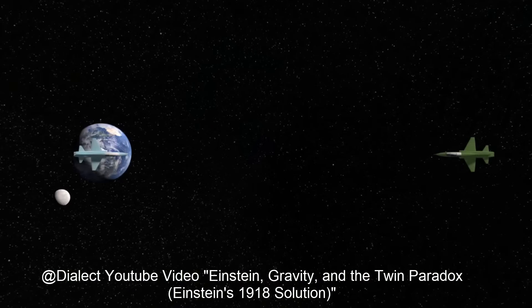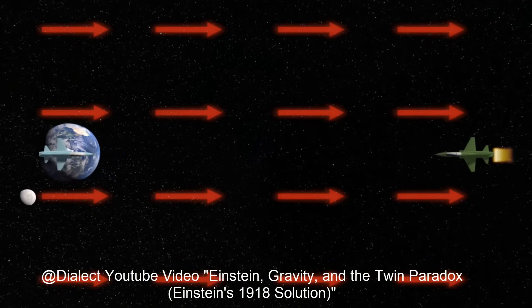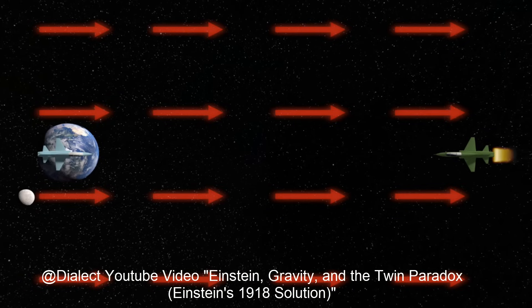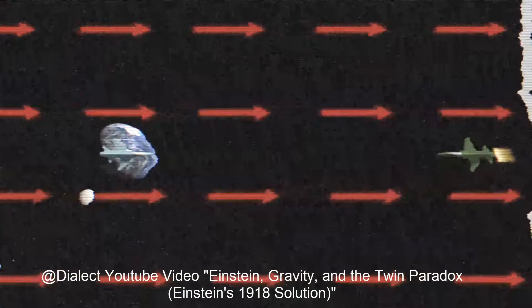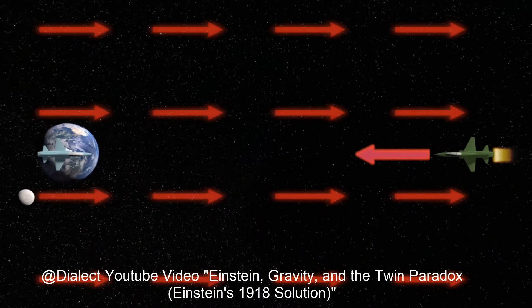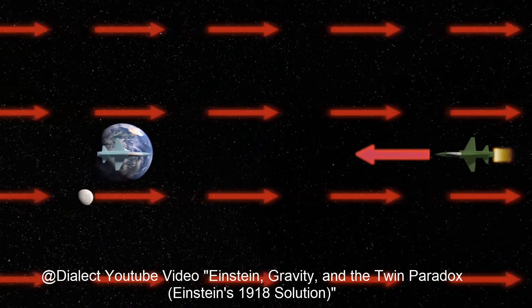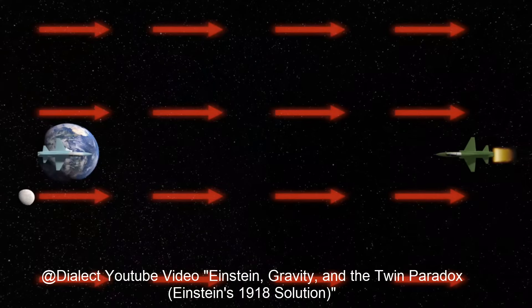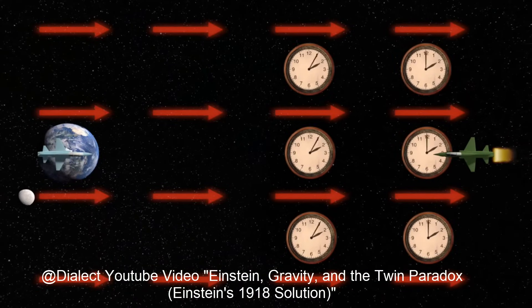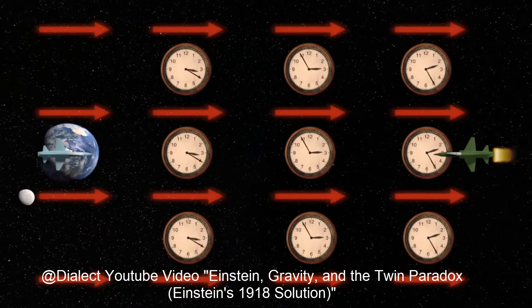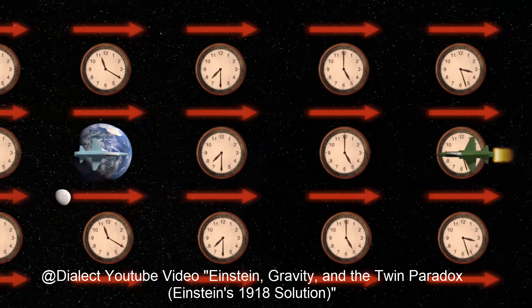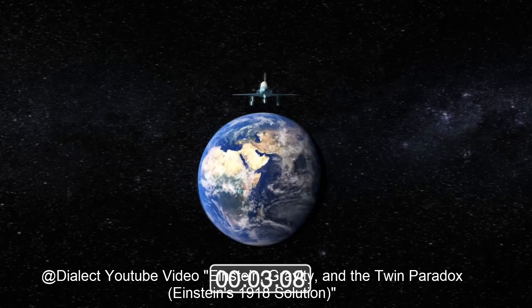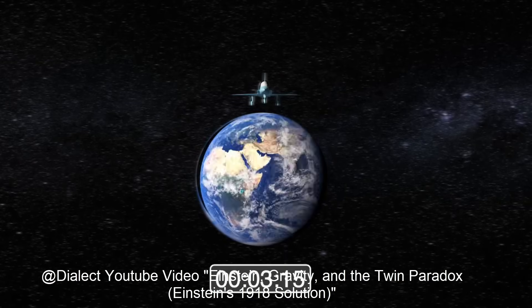The space twin will instead claim to see a uniform gravitational field arise throughout all space, one that accelerates the Earth, his twin, and the rest of the fixed stars towards him. At the same time, he feels a force from his rockets which keeps him from moving along with the rest of the universe. Now, because clocks run faster farther out in gravitational fields, distant objects will appear to age very rapidly from his perspective, and thus, by the time he finishes turning around, he will see that his Earth twin has aged through more elapsed time than himself.